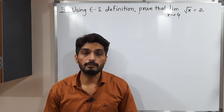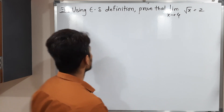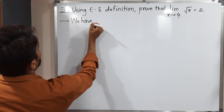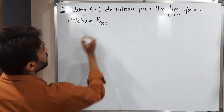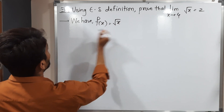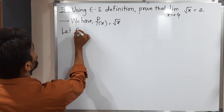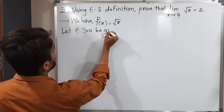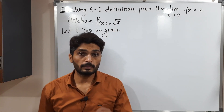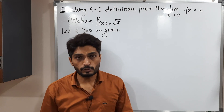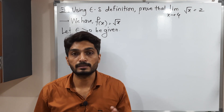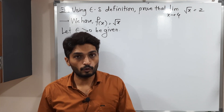Let us write the function first and we will take one epsilon. Our function f(x) is root x. Let epsilon greater than 0 be given. For this epsilon we have to find a suitable delta which will satisfy the definition. Initially, what we do first is work on |f(x) - L|. We will simplify it, then we will go further.